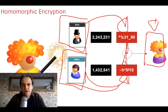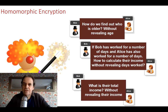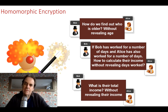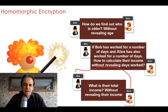We can make decisions — for example, find out how much money Bob has in his bank account without looking at all the transactions. We might ask: who's older, Bob or Alice, without either of them revealing their age? Or we might calculate how much income Bob and Alice have earned based on hours and days worked, without revealing the days worked or the hourly rate, and without revealing their total income.